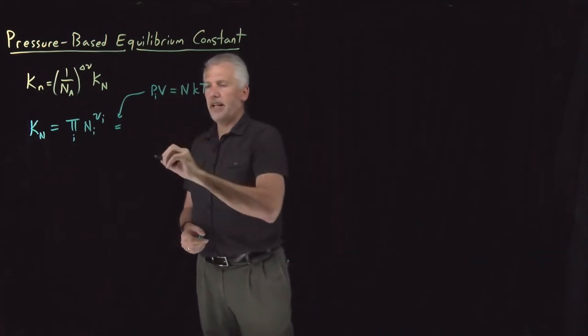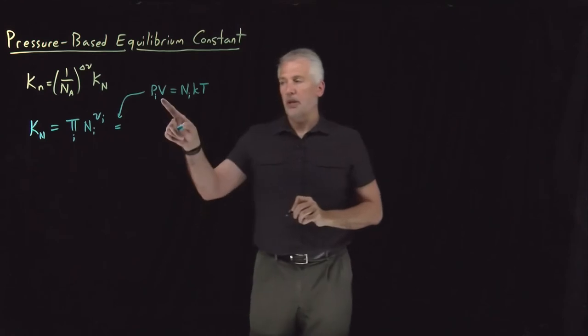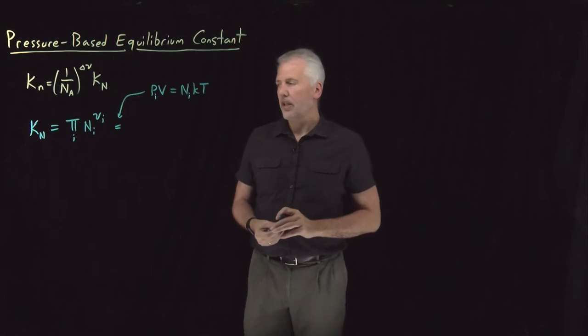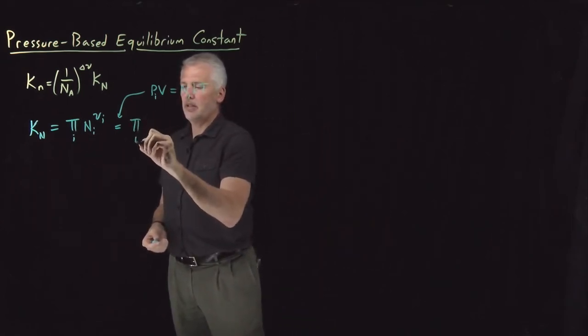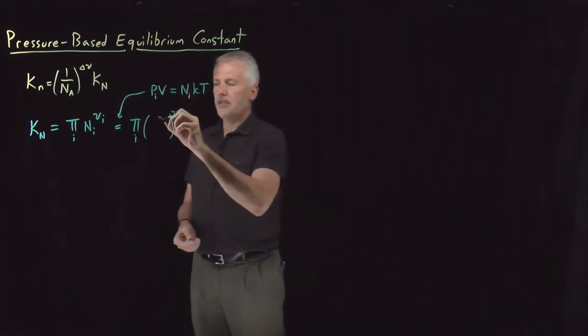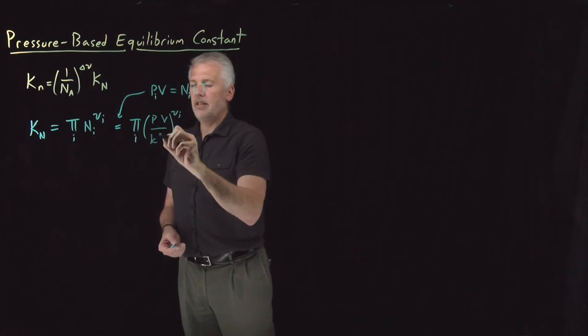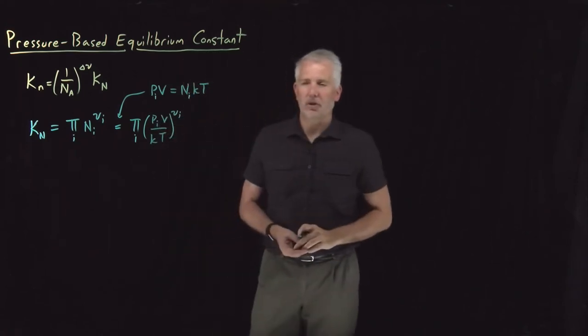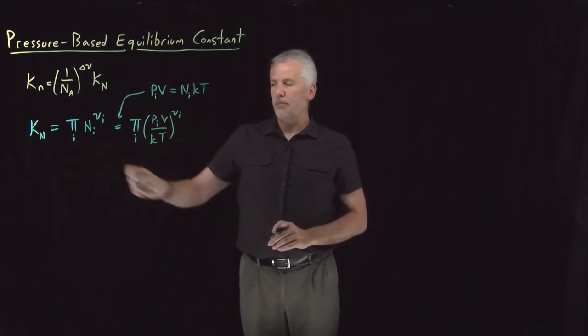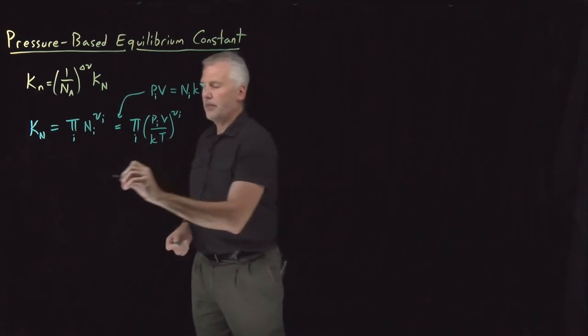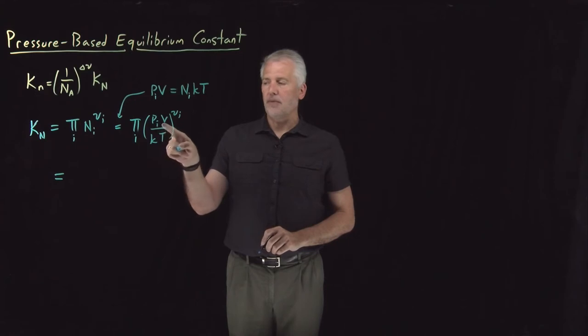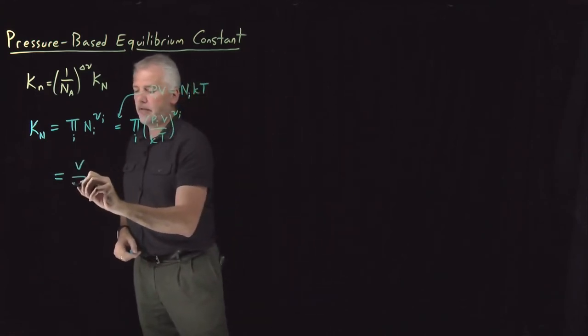The partial pressure of any gas times the volume is equal to the number of molecules of that gas times Boltzmann's constant times temperature. So if I rewrite this product of molecules raised to stoichiometric coefficients as PV over kT, where P is the partial pressure of that particular gas, then that's exactly the same as big N. If I pull out of that product the terms that don't depend on the species, so V over kT, I can pull V over kT out of that product.